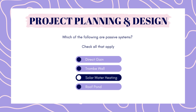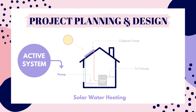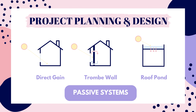The answer is direct gain, Trombe wall, and roof pond. Solar hot water heating is an active system — it includes a solar collector, a storage tank, and a pump to move the fluid, and can be used directly for faucets or showers, or indirectly to warm air or water in a separate storage tank. Direct gain systems store heat in a high thermal mass material by collecting heat through southern glass. An example is the Trombe wall, which collects heat through glass and stores it in a wall of high thermal material such as concrete, masonry, or water, with vents at the top and bottom to allow air to circulate. Roof ponds use large bags of water to store heat on the roof, collecting heat during the day and releasing it downward to the building at night.